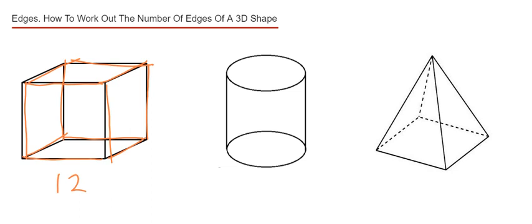Let's do our cylinder the next one. So we've got one around the top and then one around the bottom. And that gives a total of 2.